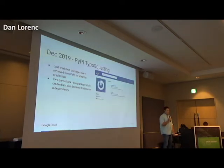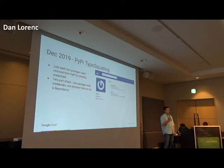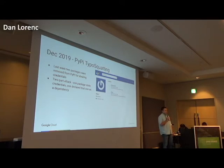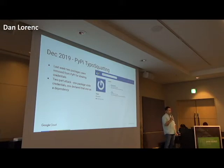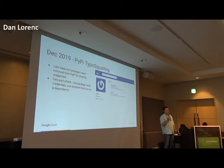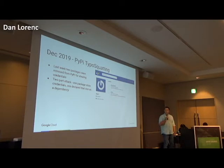Just a couple weeks ago, ZDNet reported that 17 packages were taken down from PyPI, the Python package index. This was a clever two-part supply chain attack. The first part used typosquatting — there's a library called jellyfish that's common in Python, and an attacker uploaded a version where one of the L's was switched for a '1' or 'I' character, very hard to notice. The malicious jellyfish package downloaded a payload from GitHub and executed it dynamically, stealing GPG and SSH credentials. What made this attack clever is that it was two parts.